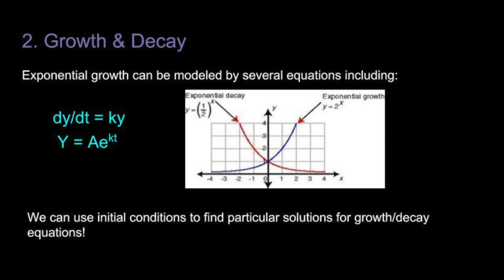One thing you'll notice in both of these equations is the constant k, which is similar to the constant of proportionality in Newton's Law. But if this k is greater than zero, it signals growth. And if it's less than zero, it signals decay.